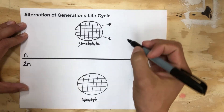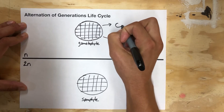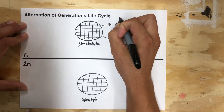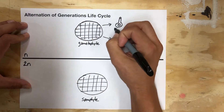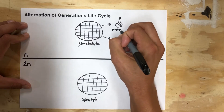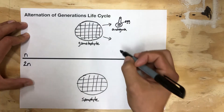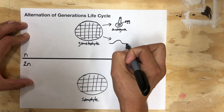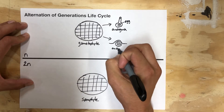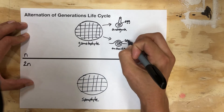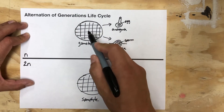The gametes are going to be found within specialized structures. The female gametangia is the archegonium, so the gametophyte is going to grow archegonia — depending on the species, this might be one or many — and inside each archegonium is a single egg cell. There are also going to be antheridia, which are packed very densely with sperm.